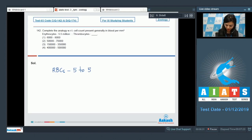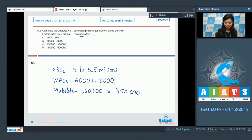WBCs are six thousand to eight thousand in number, and platelets are about one lakh fifty thousand to three lakh fifty thousand. Thrombocytes is asked, so for platelets, one lakh fifty thousand to three lakh fifty thousand. The correct answer here would be option number three.